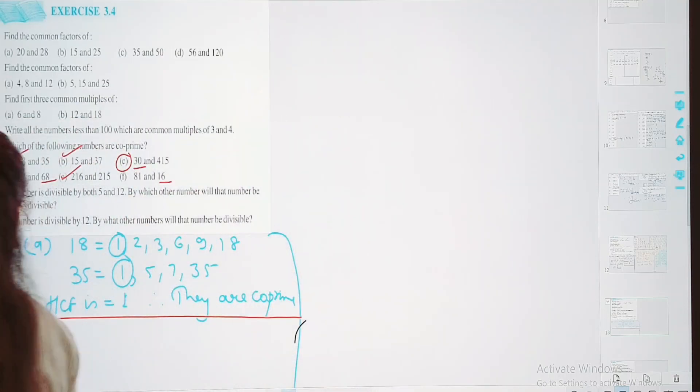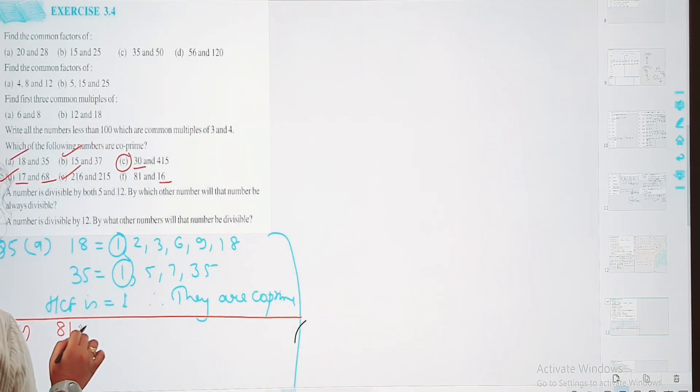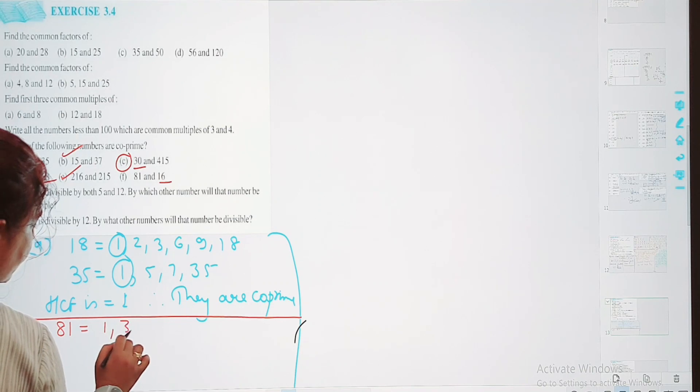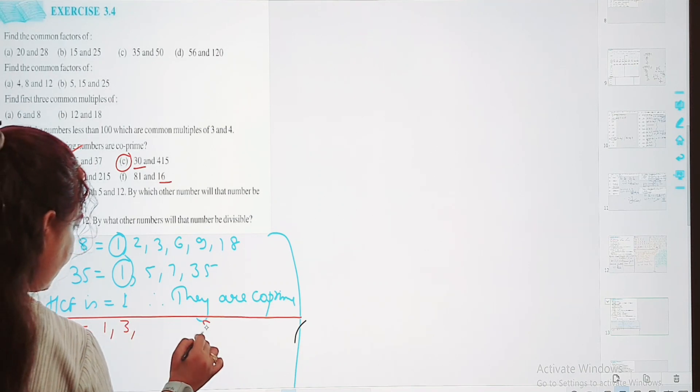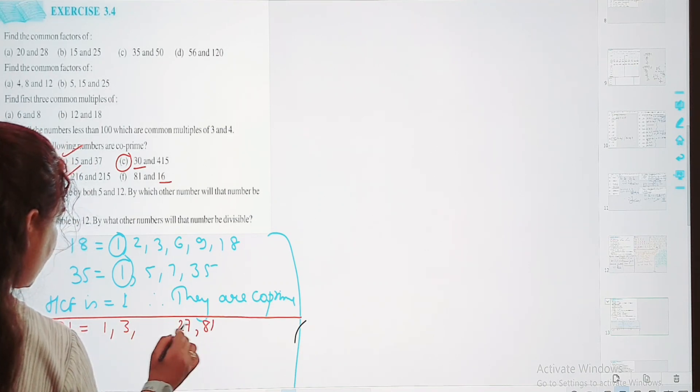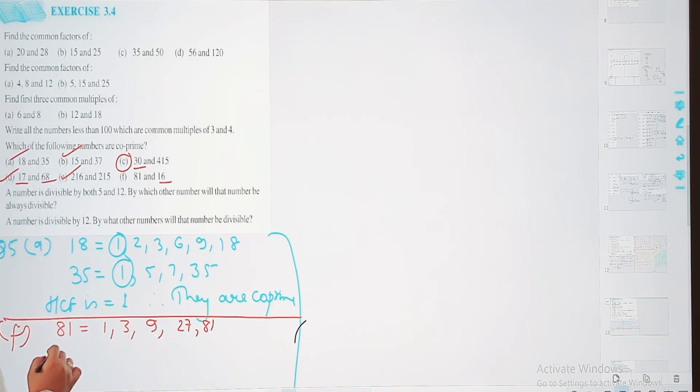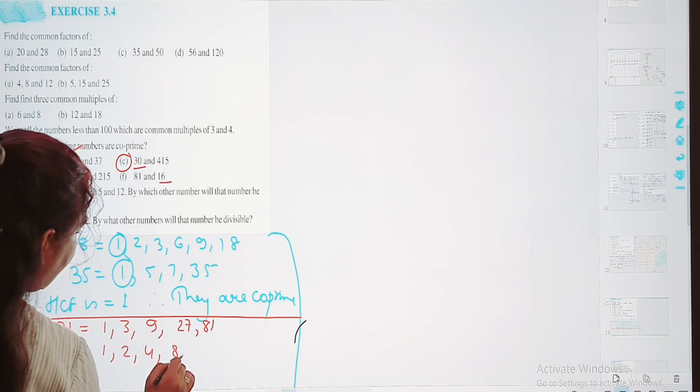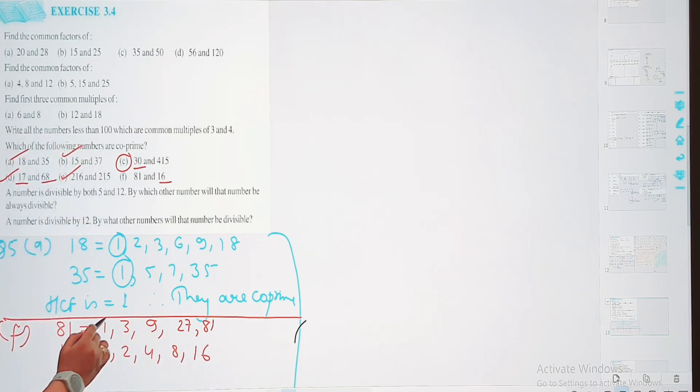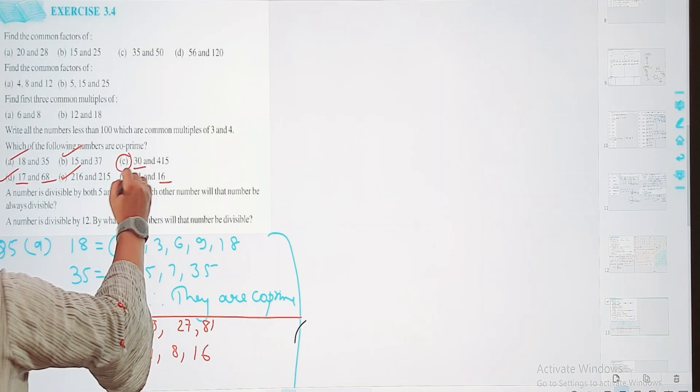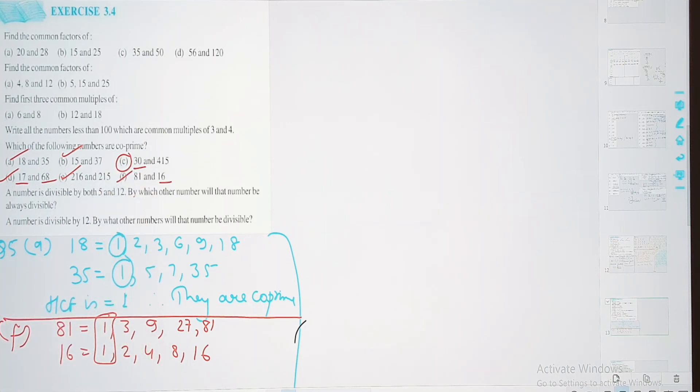Question number 5 ka F, 81 and 16 ko dhek lietai hai. 81 ka factors 1, 3, 81 za 327 za, 3, 9 za ho gya. Ab 16 me kya hai: 1, 2, 4, 8, aur 16. Yahaan pe 1 ke alaaba aur koji number in me common nahi hai. So yahaan pe bhi aapka co-prime number ho gya. Done.